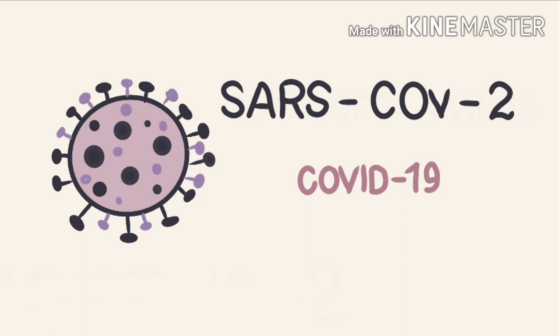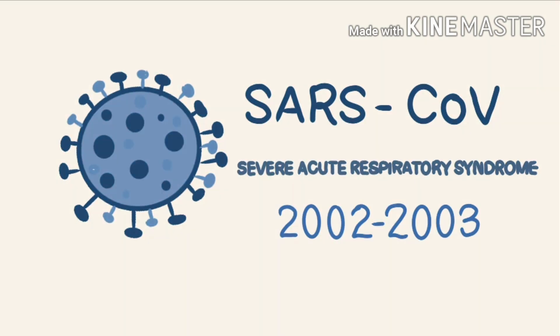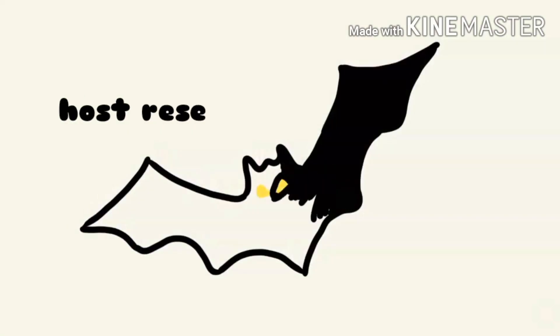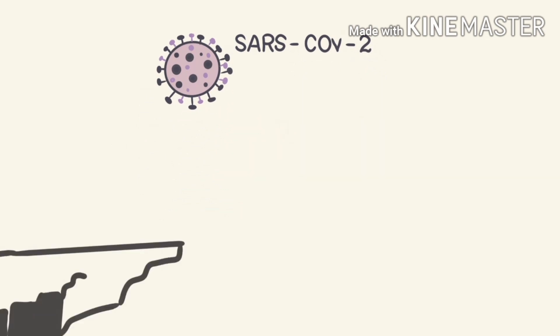Bats serve as the main host reservoir for the SARS-related coronavirus. SARS-CoV-2 is thought to have made a cross-species jump, where the virus gets transferred from one species into another.